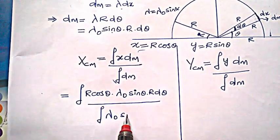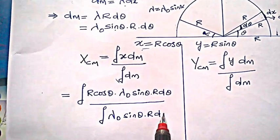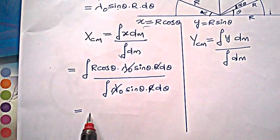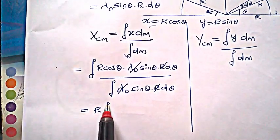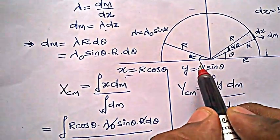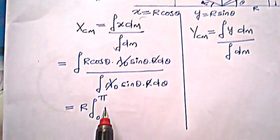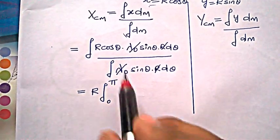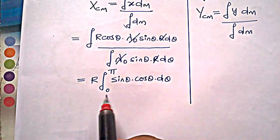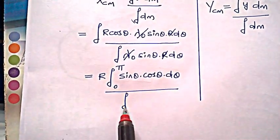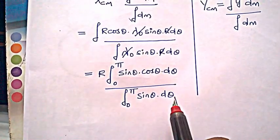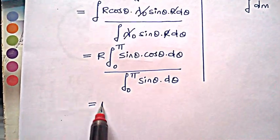We can cancel λ₀ and also cancel one factor of r since they appear in both numerator and denominator. We are left with r outside, and the limits are from 0 to π, giving: r · ∫₀^π sinθ cosθ dθ divided by ∫₀^π sinθ dθ.